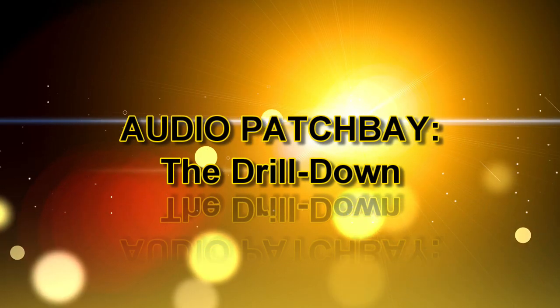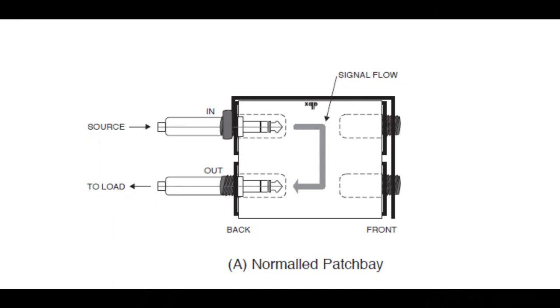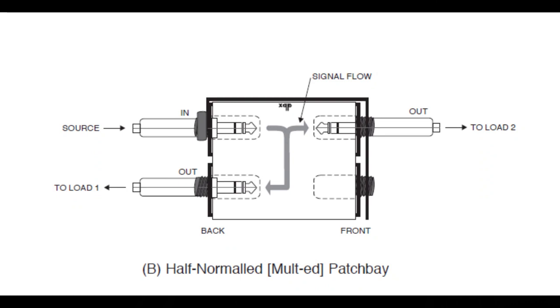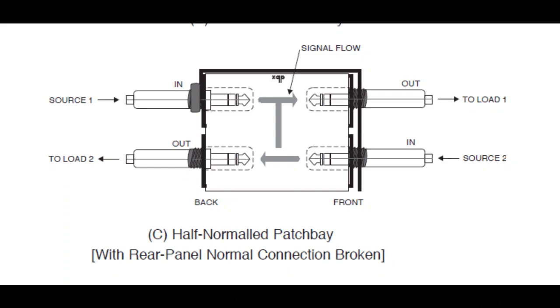To better understand audio patch bays, we need to review some common terms. The first term is normaled — audio signals automatically flow between a vertical pair of patch bay jacks without the need for patch cords. The second term is half-normaled, meaning each rear panel upper jack is normaled to the jack directly below it, as long as nothing is plugged into the lower front panel jack. Plugging into the upper front panel jack does not break that connection, while plugging into the lower front panel jack does.